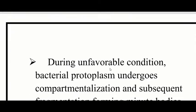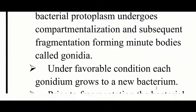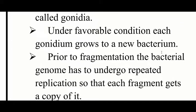During unfavourable conditions, bacterial protoplasm undergoes compartmentalization and subsequent fragmentation, forming minute bodies called gonidia. Under favourable conditions, each gonidium grows into a new bacterium. Prior to fragmentation, the bacterial genome undergoes repeated replication so that each fragment gets a copy of it.